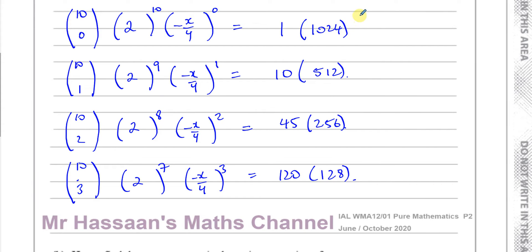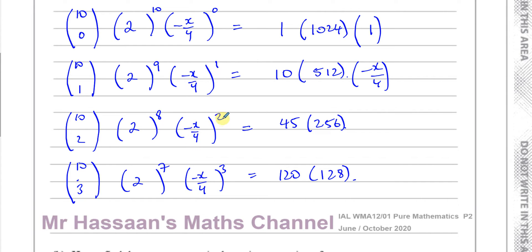Then for the third bracket: (-x/4) to the power of 0 is 1. (-x/4) to the power of 1 is minus x over 4. (-x/4) squared — you're raising it to an even power, so it's positive — gives x squared over 16. And (-x/4) cubed gives negative x cubed over 64. Be very careful to include the minus sign; don't just write x over 4.